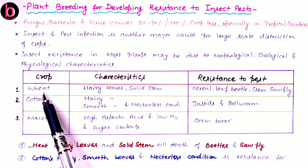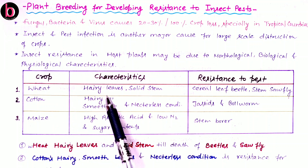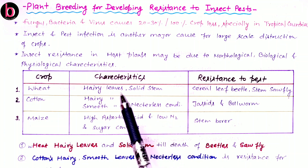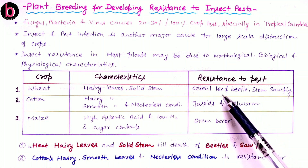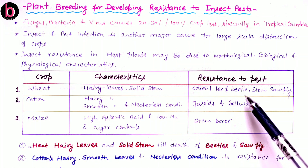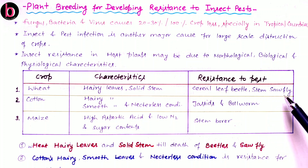The first example is wheat crop, which carries hairy leaves with a solid stem. This type of wheat plant carries resistance against the cereal leaf beetle and stem sawfly.